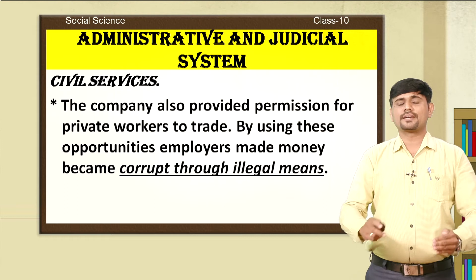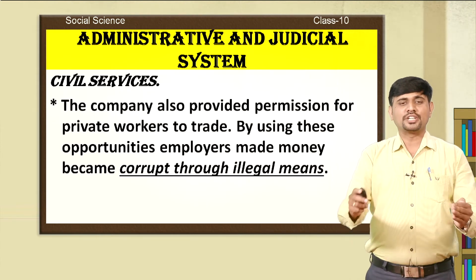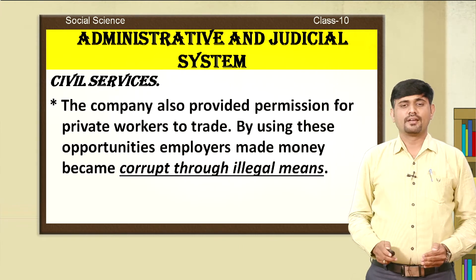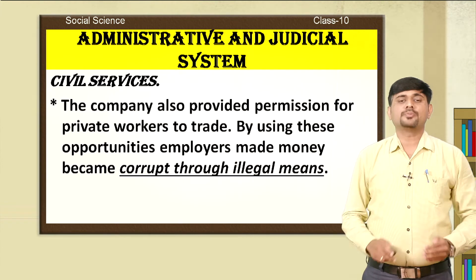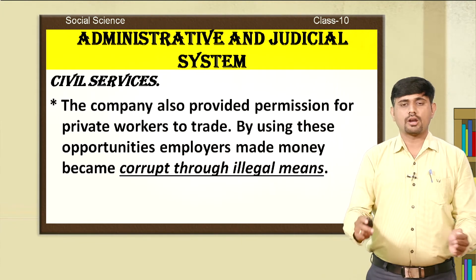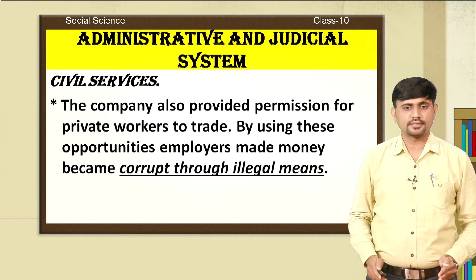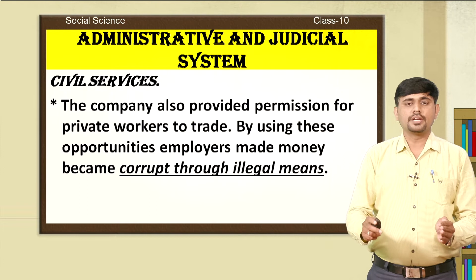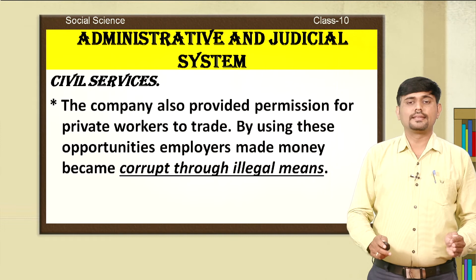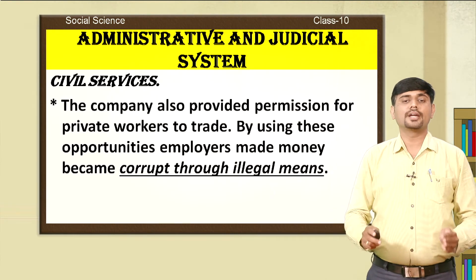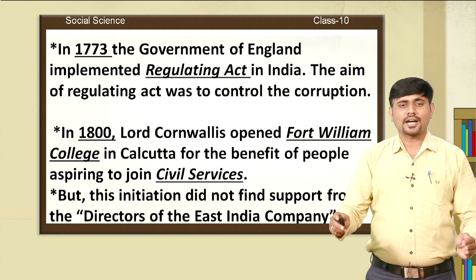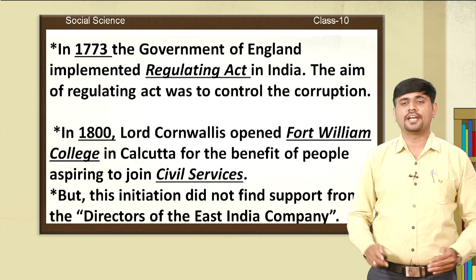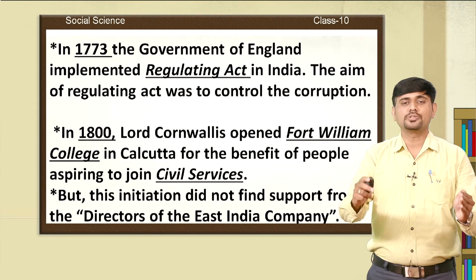The reason to introduce civil services in India — by then, there was a lot of corruption in the British East India Company, especially among its officers. They were engaged in corruption activities. To remove that corruption and bring an efficient administration system to India, Lord Cornwallis brought the new system. Initially, trade was only permitted to the British East India Company, but later permission was given even to private officials, who started earning huge amounts of money and became corrupt through illegal means. In order to control all these corruption activities, the British government in the year 1773 implemented the Regulating Act in India. This is the first milestone in the constitutional reforms of Indian history — the first act introduced by the British government in India. The aim of the Regulating Act was to control the corruption of the officers of the British East India Company in India.